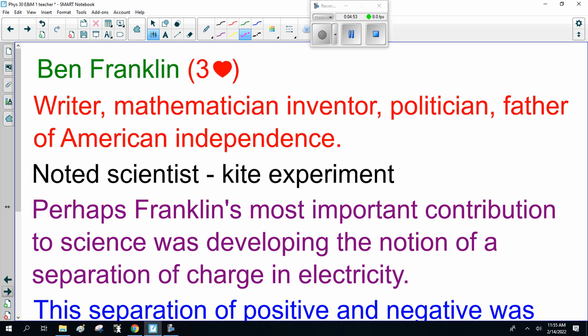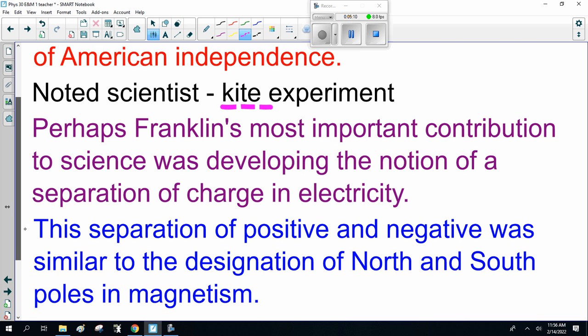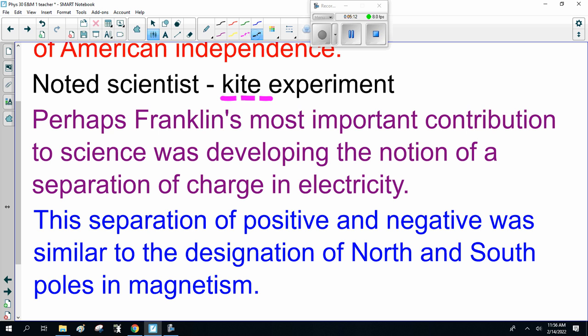Benjamin Franklin. Mathematician, inventor, politician, father of American independence, novel scientist, probably the most well-known in science for his kite experiment. Perhaps Franklin's most important contribution to science was developed in the notion of a separation of charge in electricity. This separation of positive and negative was similar to the designation north and south poles in magnetism.